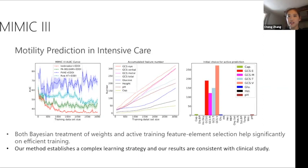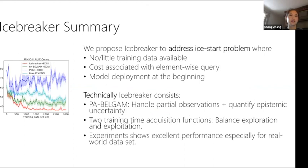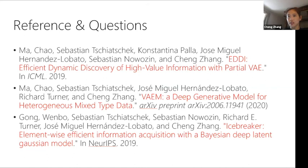In summary for Icebreaker: we address the cold start problem where no or very little training data is available with costs associated with each information acquisition. Combined with EDDI, we can deploy the model from the beginning. Technically, we propose PA-BiGAM — a full Bayesian version of partial VAE — and a hybrid inference algorithm with new objective functions. Here are the three works: EDDI published at ICML, VAEM currently on arXiv, and Icebreaker published at NeurIPS last year.